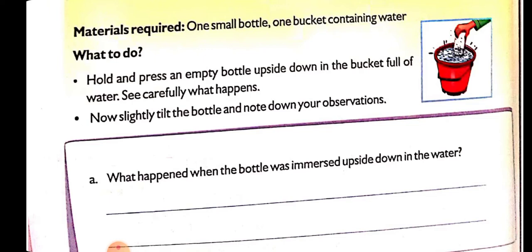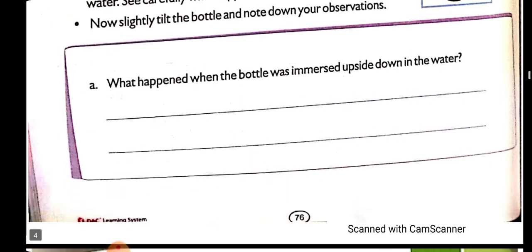The water will not go inside the bottle — because the bottle is covered by air. The water will not move inside the bottle because of the air present inside the bottle. Now slightly tilt the bottle and note down your observation. When we tilt the bottle, the air escapes, and now the water will move inside the bottle. So we can say that air occupies space.